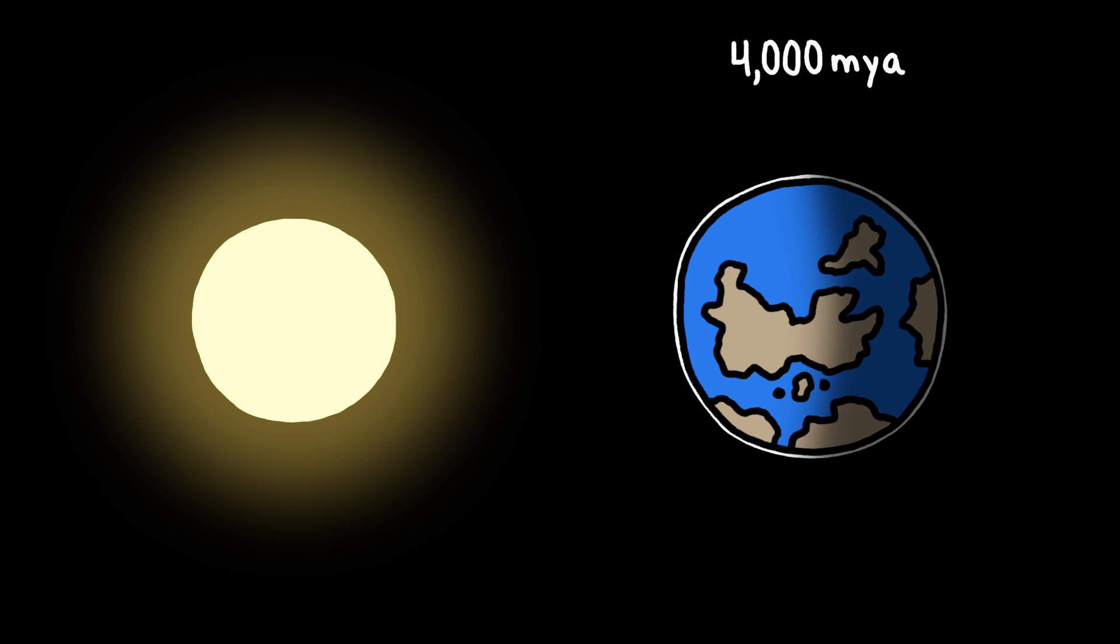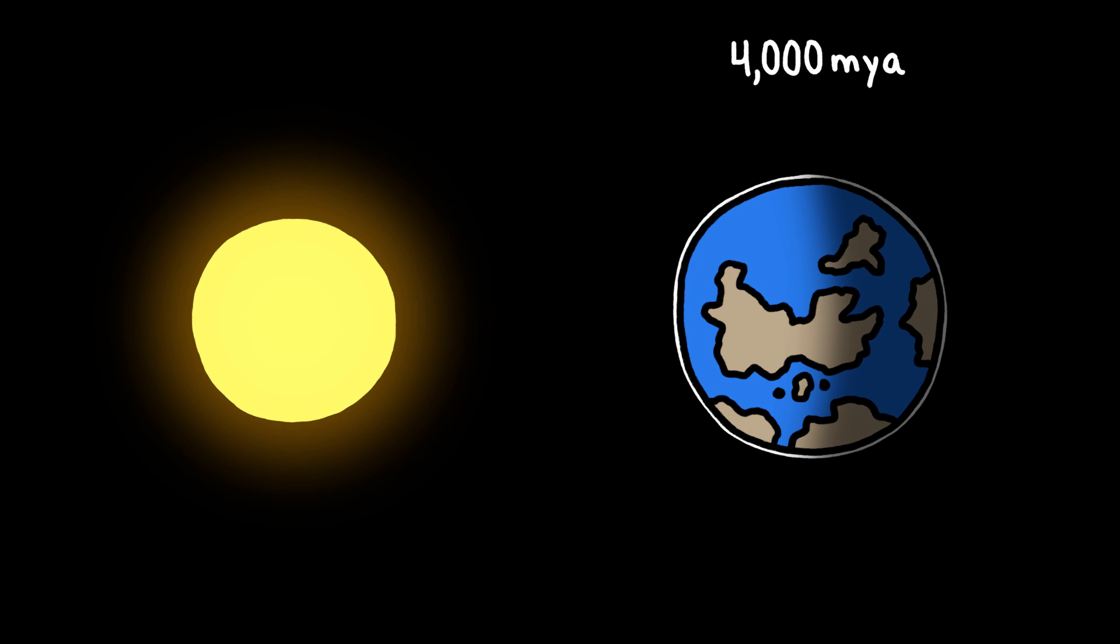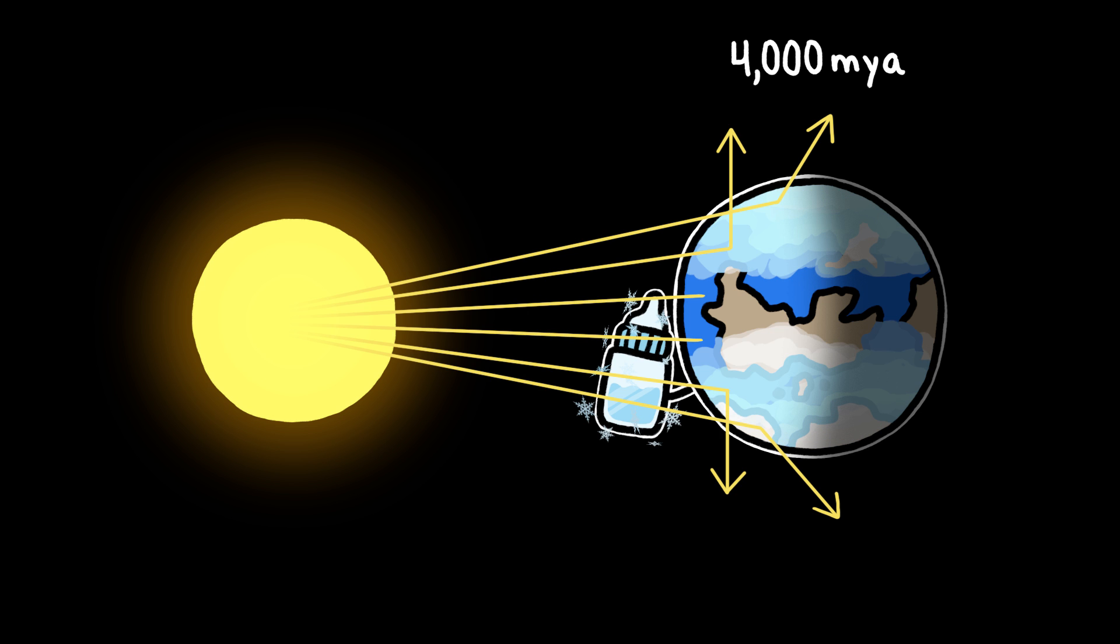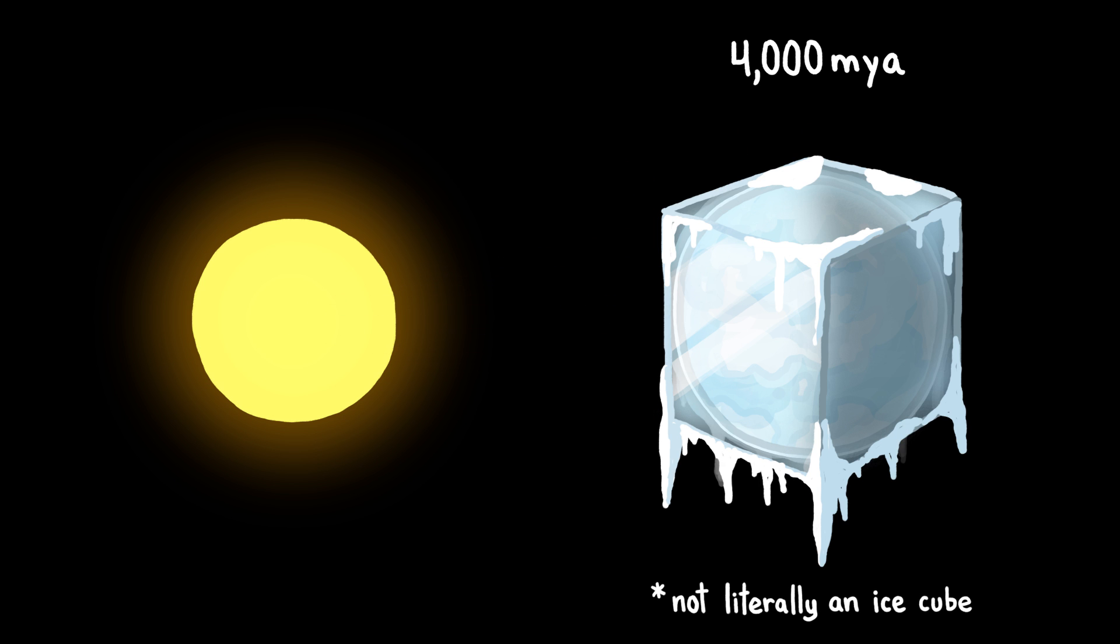This means that the sun that shined on early Earth was roughly 25% dimmer than today's sun, which should have kept our baby planet cool enough for ice at the poles to grow and reflect more sunlight and cool the planet further, producing a literal snowball effect and turning Earth into a big ice cube.